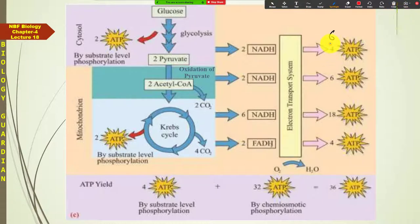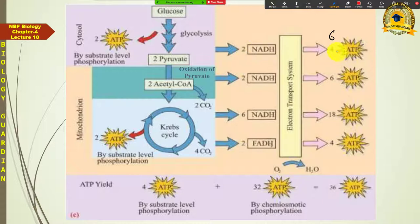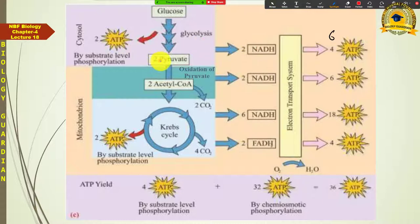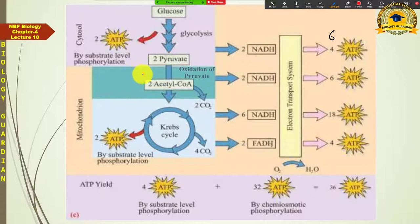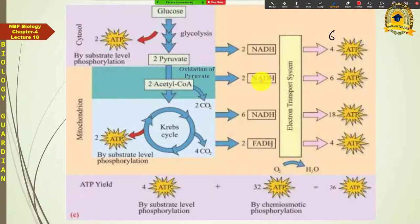This is the reason why prokaryotes have 2 more ATPs than eukaryotes. After glycolysis, the second step is where pyruvate molecules change into acetyl-CoA. No substrate level phosphorylation occurs here, but 2 NADH₂ molecules are liberated, and these are inside the mitochondria so they go directly to the electron transport chain and yield 6 ATPs.